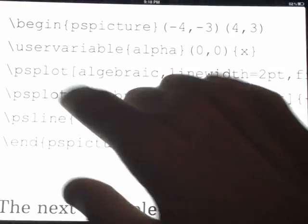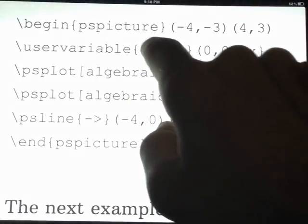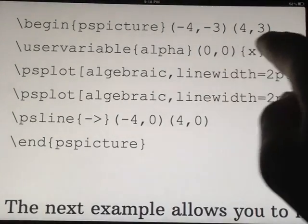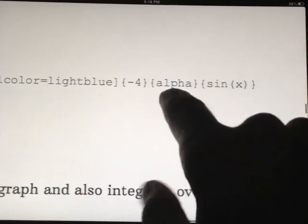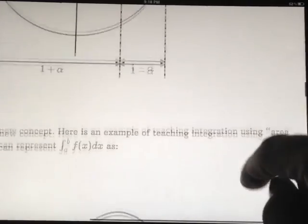That was done using a user variable. I'll just zoom in real quick. You can define a user variable. The variable name. The initial values of X and Y. And then here's the function of X and Y that happens during the user event. And then I can use that variable inside of the function of the PS plot value.